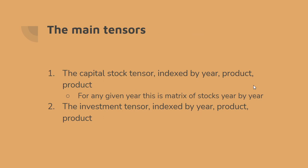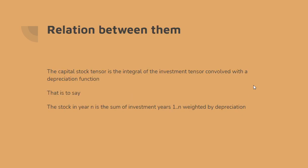What are the main tensors you have to work with? We have a capital stock tensor, which is capital stock by year, product and product. So for a given year you have a capital stock matrix, but you have these matrices stacked after one another year by year. You also have an investment tensor — each year you're producing a certain amount of investment of good X for industry Y. That's a matrix for each year and then it's extended through time to become an investment tensor. The capital stock tensor is the integral of the investment tensor convolved with the depreciation function: the stock in year N is the sum of investments in years 1 to N, weighted by depreciation.